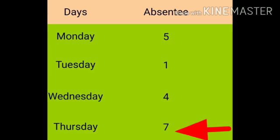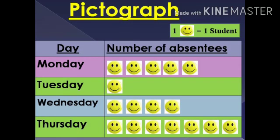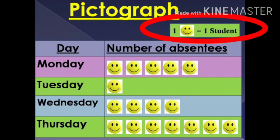On Thursday, 7 students were absent. We can make our table more attractive by drawing pictures in place of writing numbers. First of all, we assign a key — that is, 1 smiley is equal to 1 student.